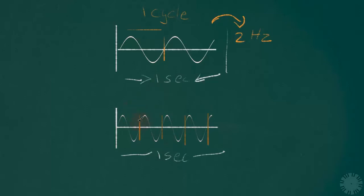Here, the vibrations are happening much more rapidly compared to the first wave. So the frequency here is four Hertz, because we measure frequency as the number of cycles per second. This wave has a frequency of 4 Hertz, and the first wave has a frequency of 2 Hertz.